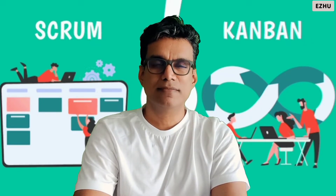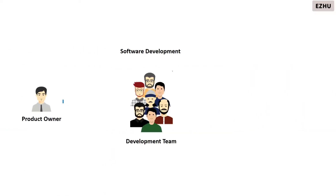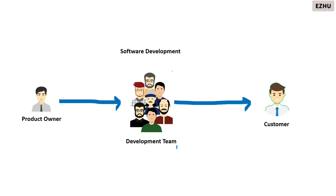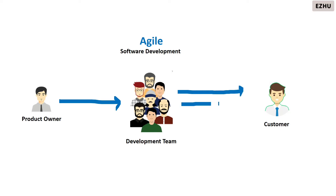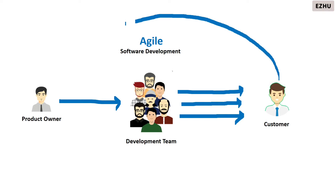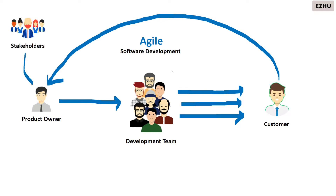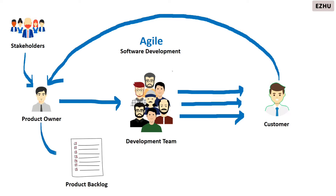In software development, the product owner defines the requirements and the development team builds the product as per the requirements and delivers to the customer. When we consider agile software development, value is delivered to the customer in the form of increments. Feedback is gathered from the customer and goes to the product owner, who consolidates the feedback, user stories, and new requirements into the product backlog, then reprioritizes the list of features for the next iteration. The scrum master forms the link between the product owner and the development team and ensures good practices are followed.